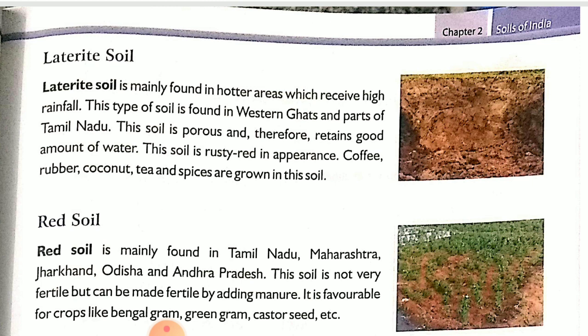Mountain soil is favorable for growing fruits such as apple, pear, peach, and plum. Next is laterite soil. This soil is rusty red in appearance, and coconut, tea, and spices are grown in this soil.